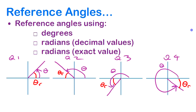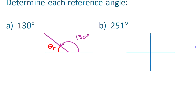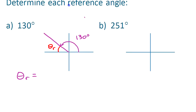Let's look at some specific values in degrees. Starting with 130 degrees — that's in quadrant two. The reference angle is this part in here, theta r. To find it, you go halfway around and subtract that piece. So we do 180 degrees take away theta, which is 180 degrees minus 130 degrees, giving us 50 degrees.